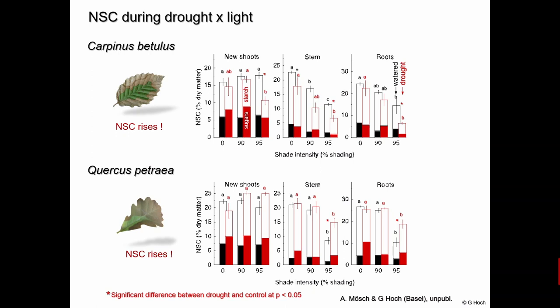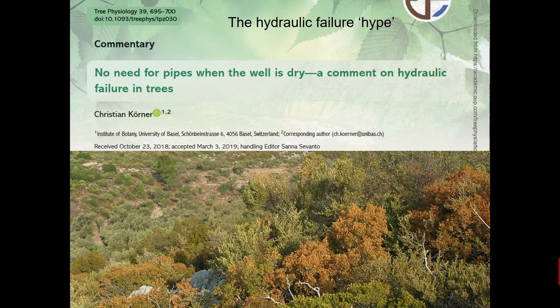This is excellently documented by Bertrand Muller and others for many crop and tree species. Under all cases ever examined, growth is more sensitive to water shortage than photosynthesis. This was confirmed in an experiment by Gunther Hoch in Basel, where different tree species as seedlings were exposed to drought under various light regimes. The drought individuals — shown in red — almost always had more carbohydrates than the controls, with only two exceptions.